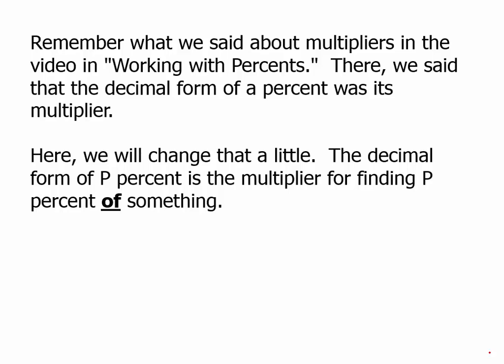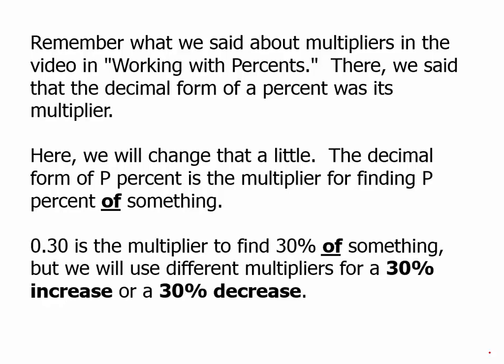Just change the percent to a decimal. So 0.3 is the multiplier to find 30 percent of something, but we will use different multipliers for a 30 percent increase or 30 percent decrease. We'll talk about multipliers for an increase in this video and multipliers for a decrease in the next video.